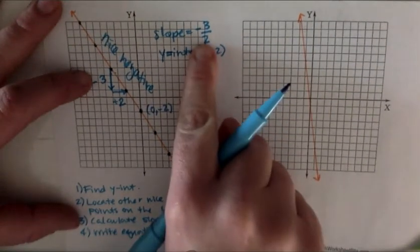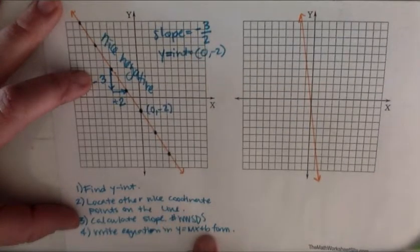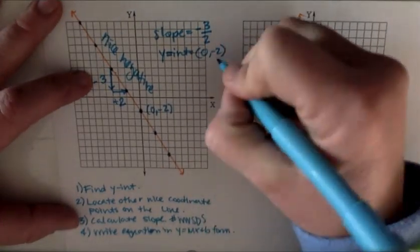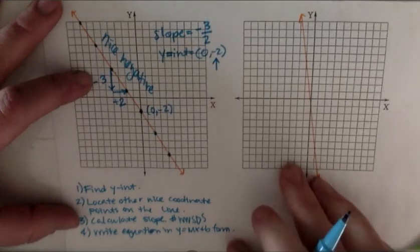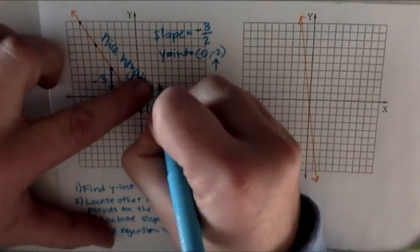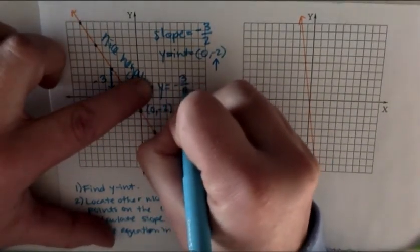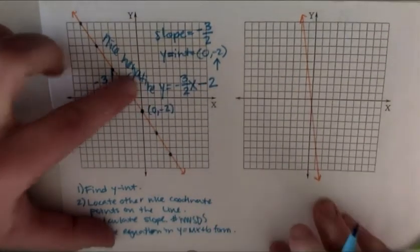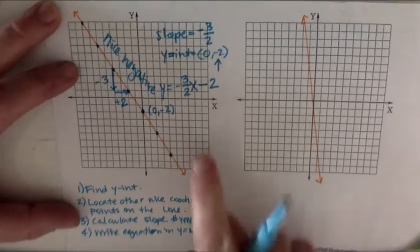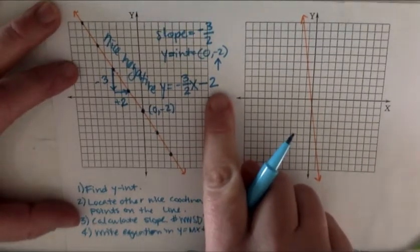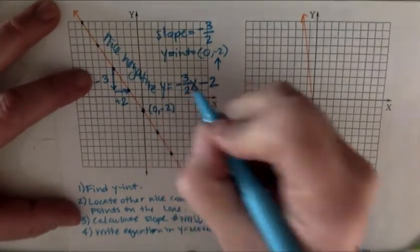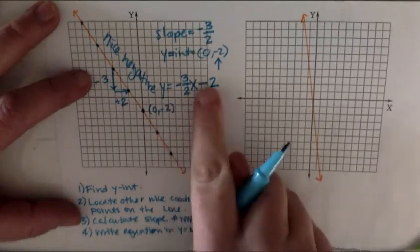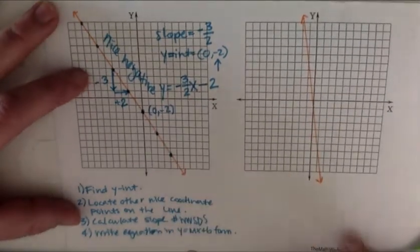Instead of writing the m, we'll write negative three over two. Instead of writing b, we're going to write just that negative two. So we're going to write y equals negative three over two x minus two as my final equation. You could totally write plus a negative two. That's totally fine, but you don't necessarily have to. And you can simplify that plus a negative and write minus two.